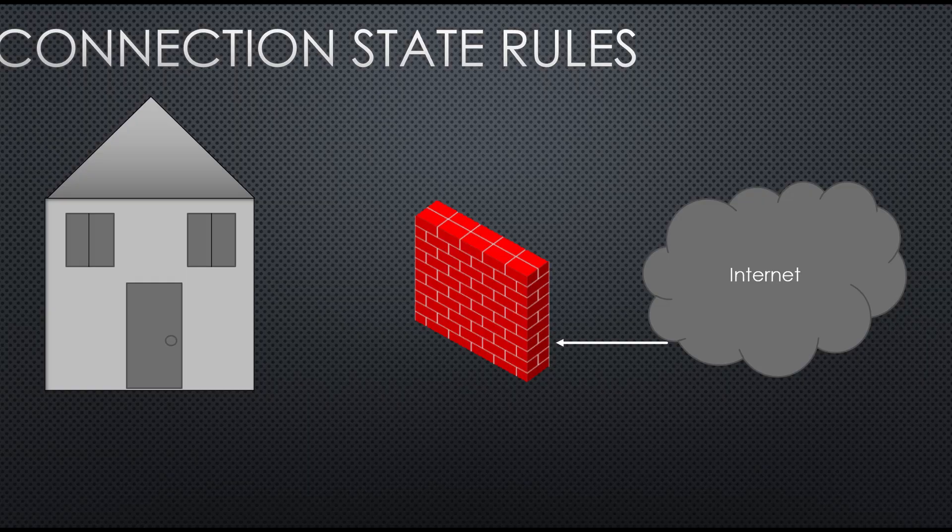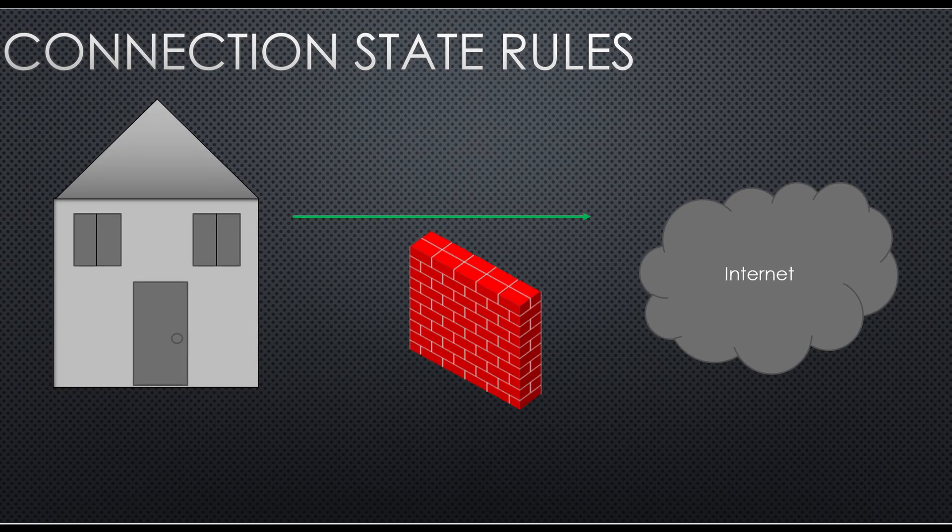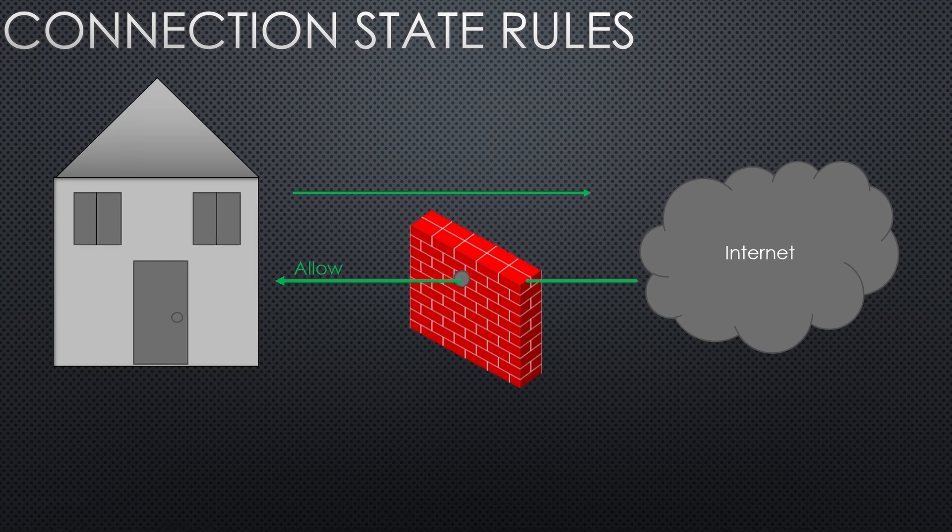The last thing to understand is connection state, which is actually quite important. It gives us the ability to understand if this is a new request, if it was related to another request, if it's a response to a request previously made, or if it doesn't fit any of those categories. This gives us intelligence about the rules we apply — maybe we don't let traffic come into our network unless we initiated a connection outside of it first. That's a very common rule and often the default on many network routers.